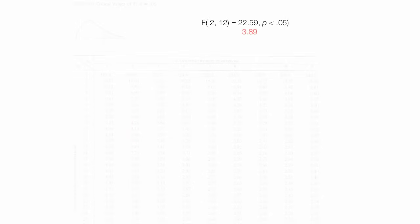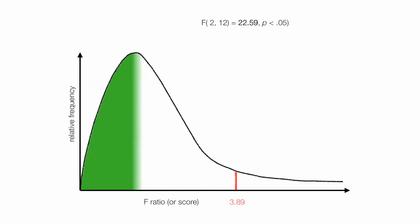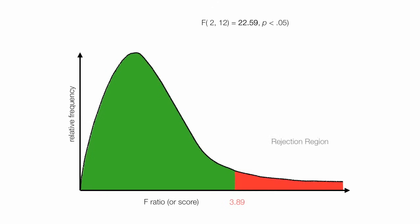So the critical value is 3.89, and I'll draw in my little curve so we can see. I always like to visualize things. The F ratio is the curve in right there. Now the 3.89 is approximately right here, and that's the critical value. And the rejection region is if the results are larger than 3.89. Obviously they are. It's 22.59. So we reject the null hypothesis.